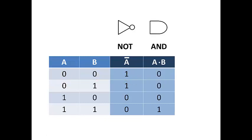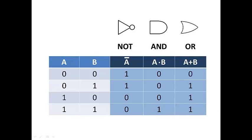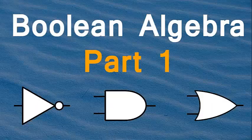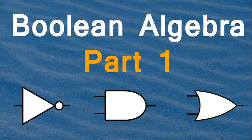AND gate, written as A dot B or just AB, is only 1 when A and B, or all inputs, are 1. And the OR gate is 1 any time any of the inputs is 1. That concludes our first lesson on Boolean algebra. I'm Joe, thank you for watching.